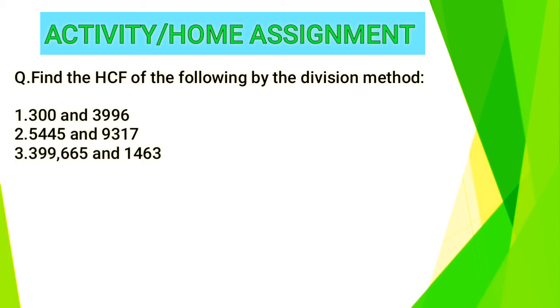Number 2, 5445 and 9317. In both values, the smallest one you have to suppose as a divisor. Number 3, 399665 and 1463. Now solve the given task in your notebook.